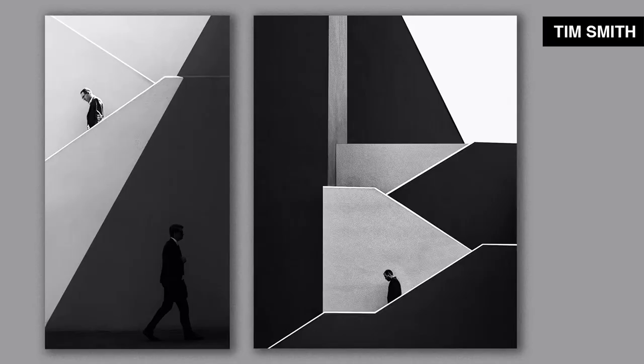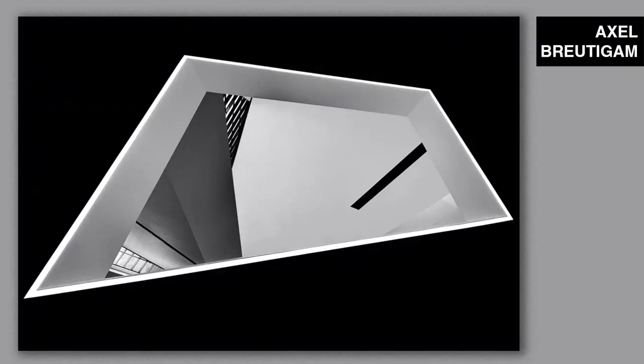Diagonal lines draw attention to specific points of interest and create a sense of movement and dynamic energy within the frame, propelling the viewer on a visual exploration. Look for angular elements in your surroundings and incorporate them into your composition to add depth and intrigue. Next time you are out and about, keep an eye out for leading lines and diagonals — shapes and forms that could serve as leading lines in a composition. These concepts are not complex; once you understand them, you can easily put them into practice.